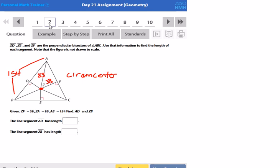Let's start off with AD. Well, because a perpendicular bisector bisects a side, it cuts it in half, then AD would be half of the 154. 154 divided by 2 is 77.